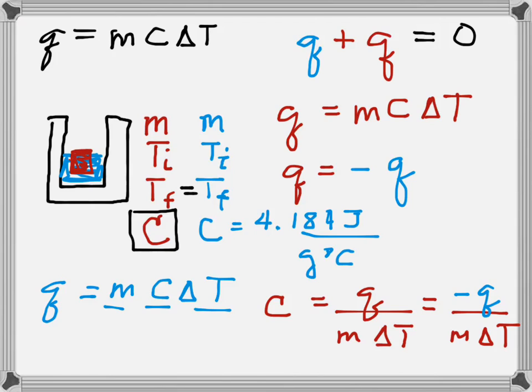The fact is that the calorimeter is going to absorb a little bit of the heat. If we want a really good result, we can't just ignore that and pretend it doesn't happen. So this equation really is a little bit more complicated. The heat lost by the hot metal and the heat gained by the cold water and the heat gained by the cup have to add up to zero.